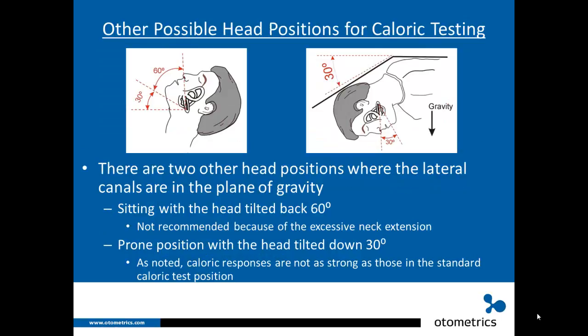There are two other head positions where the lateral semicircular canals are in the plane of gravity. The first is when the patient is sitting upright with the head tilted back 60 degrees, which is not recommended due to excessive neck extension. The other is when the patient is in the prone position with the head tilted down 30 degrees, which is not recommended for routine clinical testing because caloric responses in this position are not as strong as in the standard caloric test position.